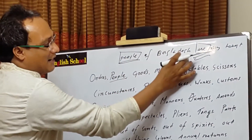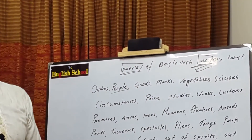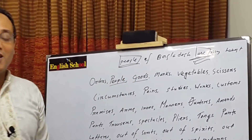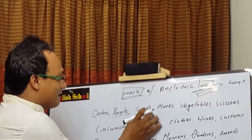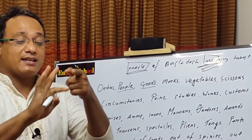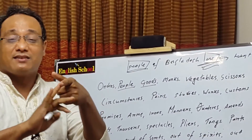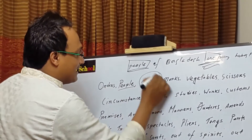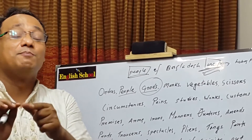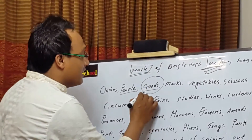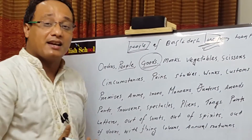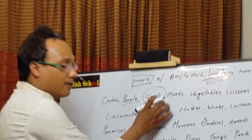The next example is 'goods.' We sometimes use 'good,' but 'good' refers to something different — like good, bad, better, best. When referring to products, we must use 'goods.' For example: 'What is the shipment date of my goods?' 'Goods' is considered as products, and it must be plural, so the verb must also be in plural form.